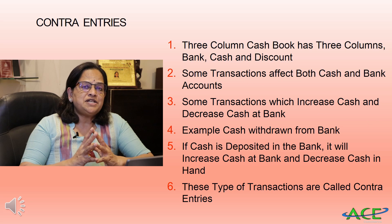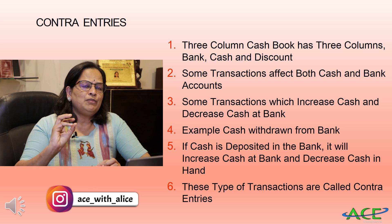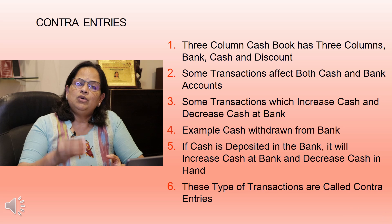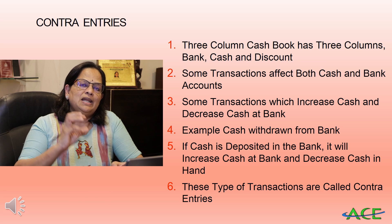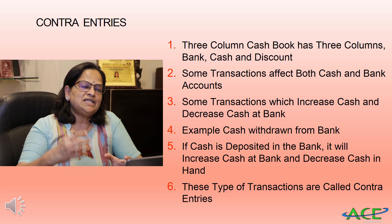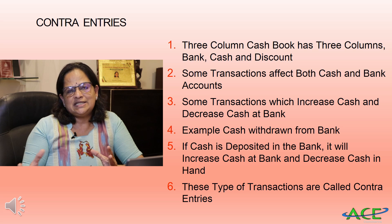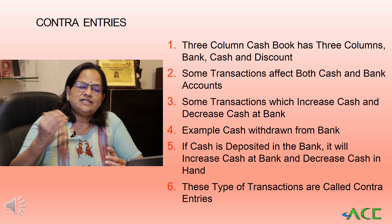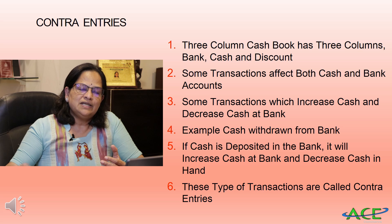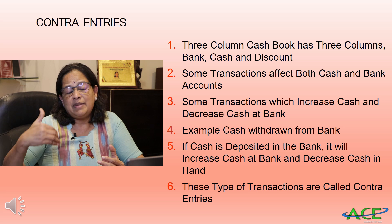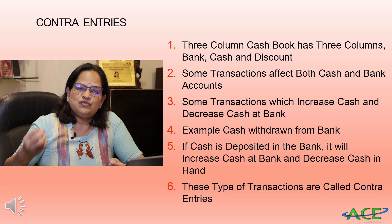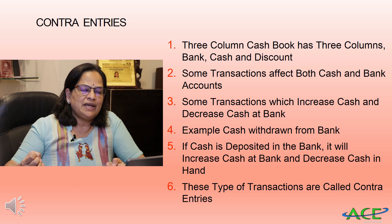Contra entry is a very important concept. The three column cash book has three columns — the amount column is divided into bank, cash, and discount. Some transactions will affect both the cash balance and the bank balance. For example, amount deposited in the bank or amount withdrawn from the bank — these transactions have an impact on both the bank account and cash in hand. Cash withdrawn from bank increases cash in hand but decreases cash at bank.